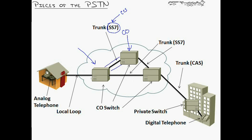On the analog side, you have a local loop that runs out of the CO switch through the whole neighborhood and ends up connecting into the various houses, plugging into analog telephones at the other end. Even that is changing because carriers are now running fiber optic cabling everywhere instead of copper. They have hybrid fiber coaxial connectors that convert fiber to a coax connection, or hybrid fiber-to-copper connectors that support an analog signal — so there are all kinds of ways to connect to the end user.